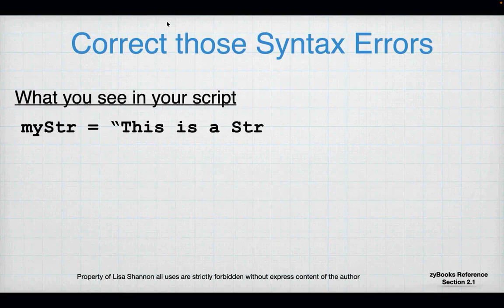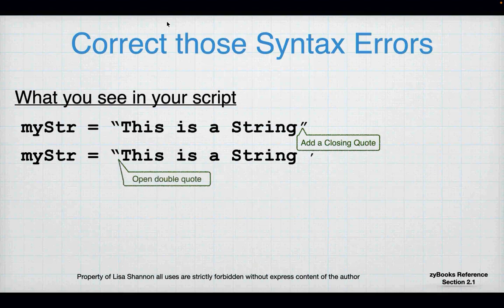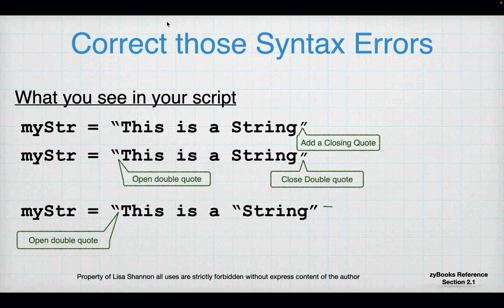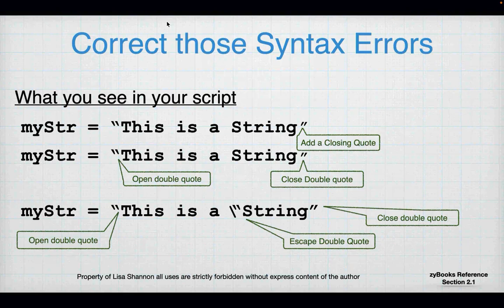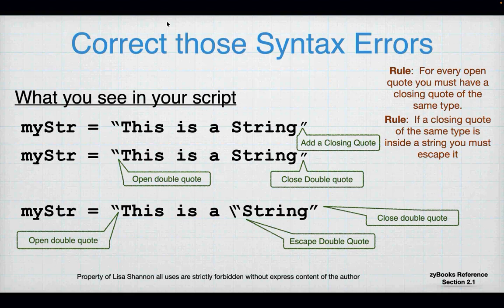So let's see how to correct these errors. I simply add a closing quote. To fix opening with a double quote and closing with a single quote, I just change it to close with a double quote. For the odd three-quote situation — where there's a double quote in the middle of a string — there are actually two things you can do: you can escape it with a backslash, or you could surround the string with single quotes. The backslash is used to escape a quote inside a string that is the same kind as the opening and closing quote.